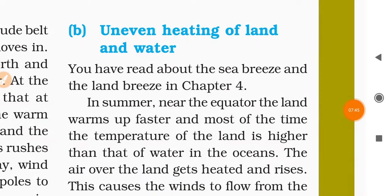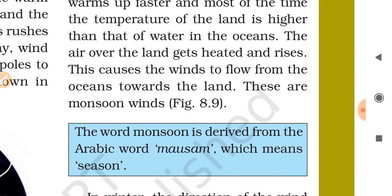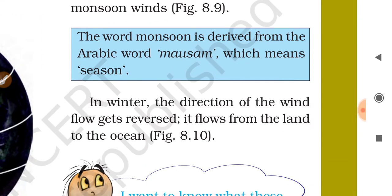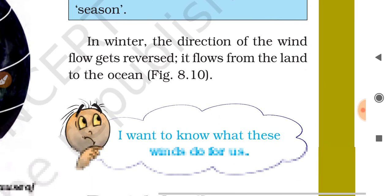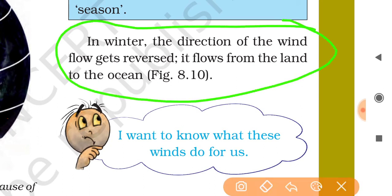Now we read about the uneven heating of land and water. You have read about the sea breeze and the land breeze in chapter 4. In summer near the equator, the land warms up faster, and most of the time the temperature of the land is higher than that of the ocean. Air over the land gets heated and rises, causing wind to flow from the ocean towards the land — these are monsoon winds. In winter, the direction of wind flow gets reversed and it flows from land to ocean.